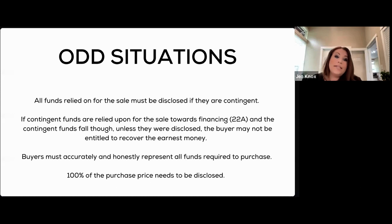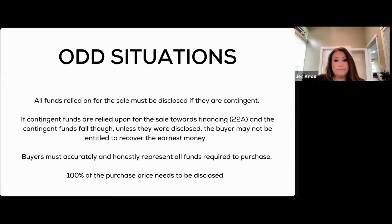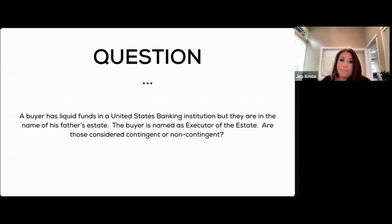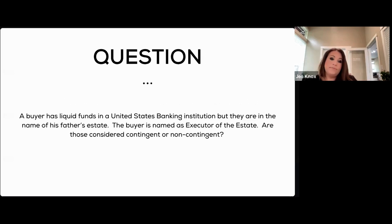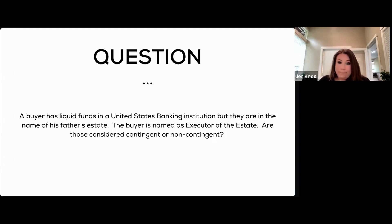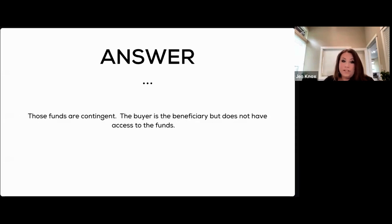Here's an edge case: a buyer has liquid funds in a U.S. banking institution, but they are in the name of his father's estate, and the buyer is named as executor. Are these funds contingent or non-contingent? Think back to the definition: non-contingent funds must be in a U.S. banking institution, readily available, and in the buyer's name. Those funds are technically contingent — the buyer is only a beneficiary and does not have direct access to those funds as executor of the estate.